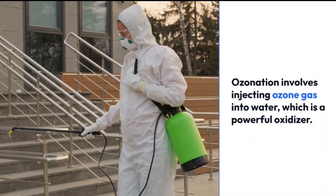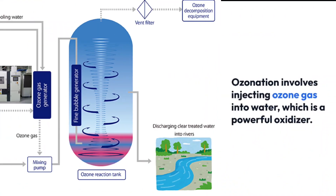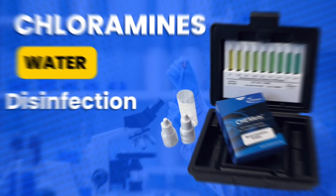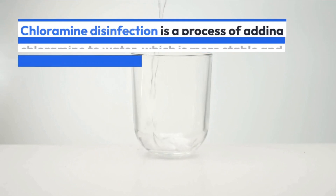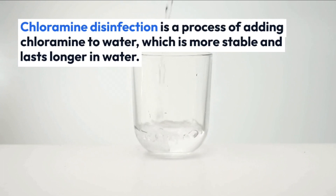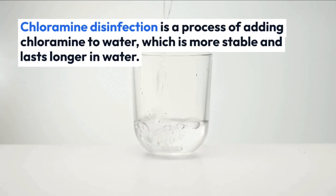Ozonation is a process of injecting ozone gas into water. Ozone is a powerful oxidizer that kills bacteria, viruses, and other microorganisms. Chloramine disinfection is a process of adding chloramine to water. Chloramine is a less powerful oxidizer than chlorine, but it is more stable and lasts longer in water.